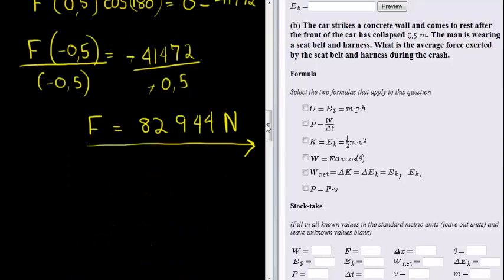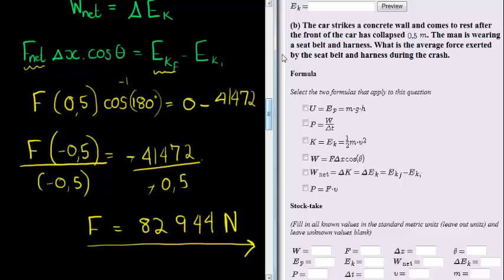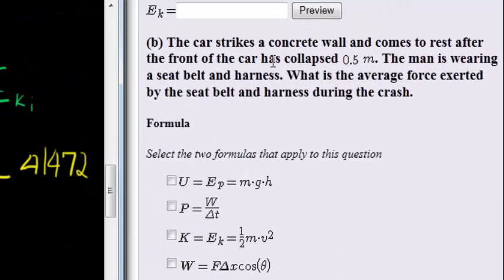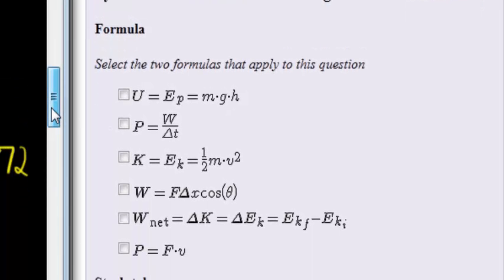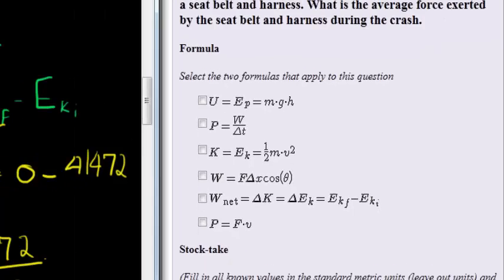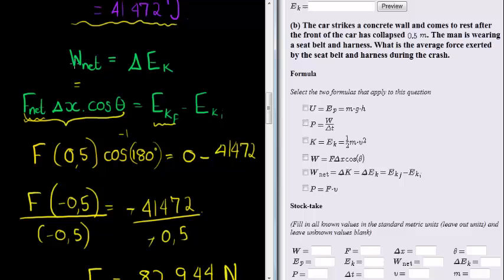So let's go and fill in only part B, part A is quite easy. The car strikes a concrete wall and comes to rest this question. So which are the two formulas that we use? They say select two formulas that apply to this question. Well, you can notice here that we use the formula that net work done is equal to force times displacement times cosine of the angle between them.